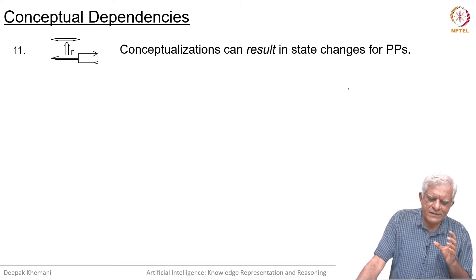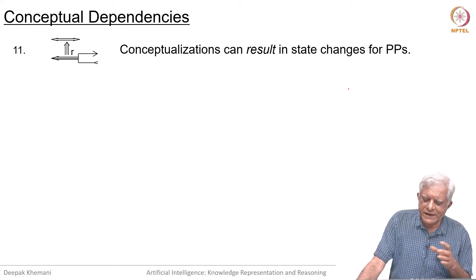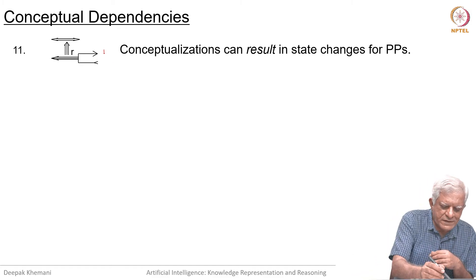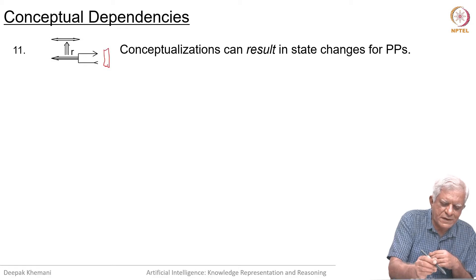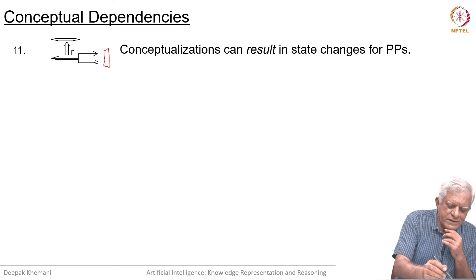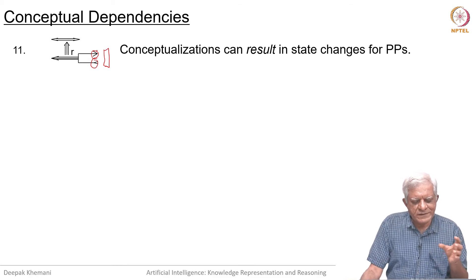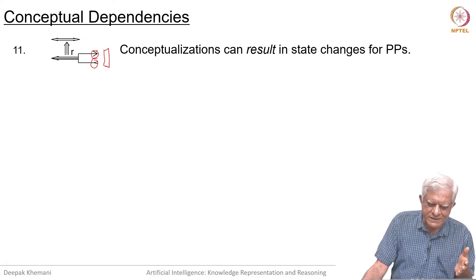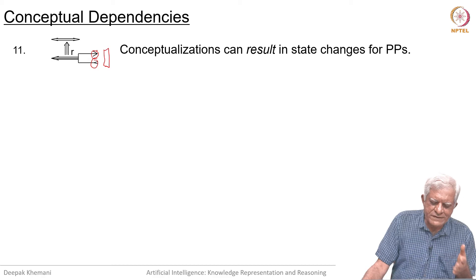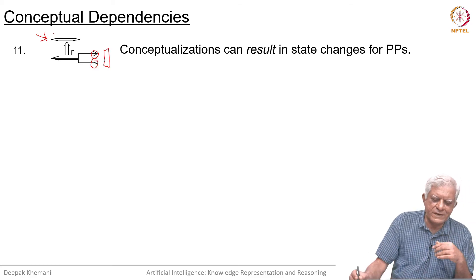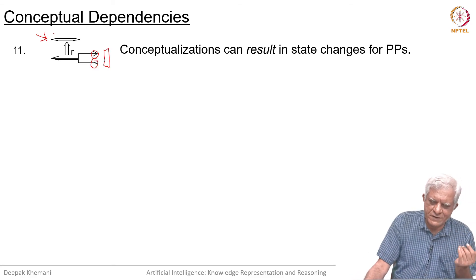There can also be relations between conceptualizations themselves. Conceptualizations can result in state changes for picture producers. What you see here is that the bottom part is a state change — it goes from this state to this state. Remember, those three lines are stative in nature, and this particular diagram represents a state change. What we are saying is that something happened, shown on the top, which resulted in the state change event.